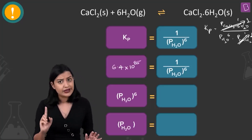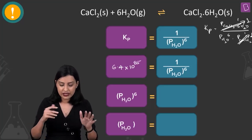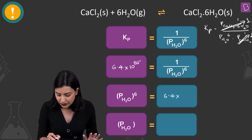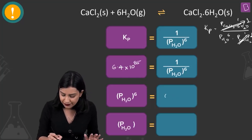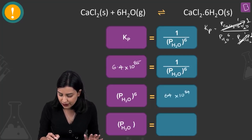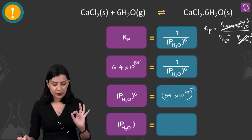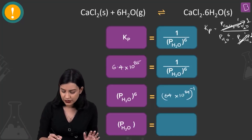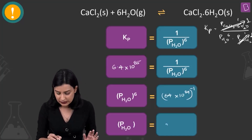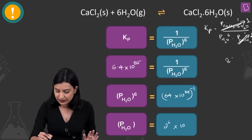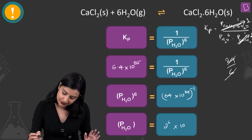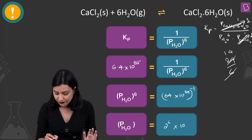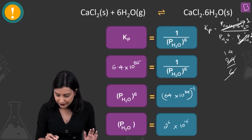Kp is given as 6.4×10⁸⁵, so P(H₂O)⁶ = (6.4×10⁸⁵)⁻¹ = (64×10⁸⁴)⁻¹. Taking the sixth root: P(H₂O) = (64×10⁸⁴)^(−1/6). Now 64 = 2⁶, so the sixth root of 64 is 2, and the sixth root of 10⁸⁴ is 10¹⁴.